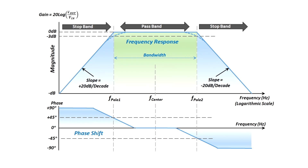A Bode plot is a graph of gain, which is the ratio of Vout over Vin, as well as a graph of phase shift of Vout relative to Vin over a band of frequencies. You can create straight-line approximations of gain and phase based on poles and zeros of a circuit's transfer function. This was developed by Dr. Hendrik Wade Bode about 100 years ago. The magnitude of gain is plotted logarithmically on the vertical axis versus logarithmic frequency on the horizontal axis, but phase is plotted linearly in units of degrees on the vertical axis.